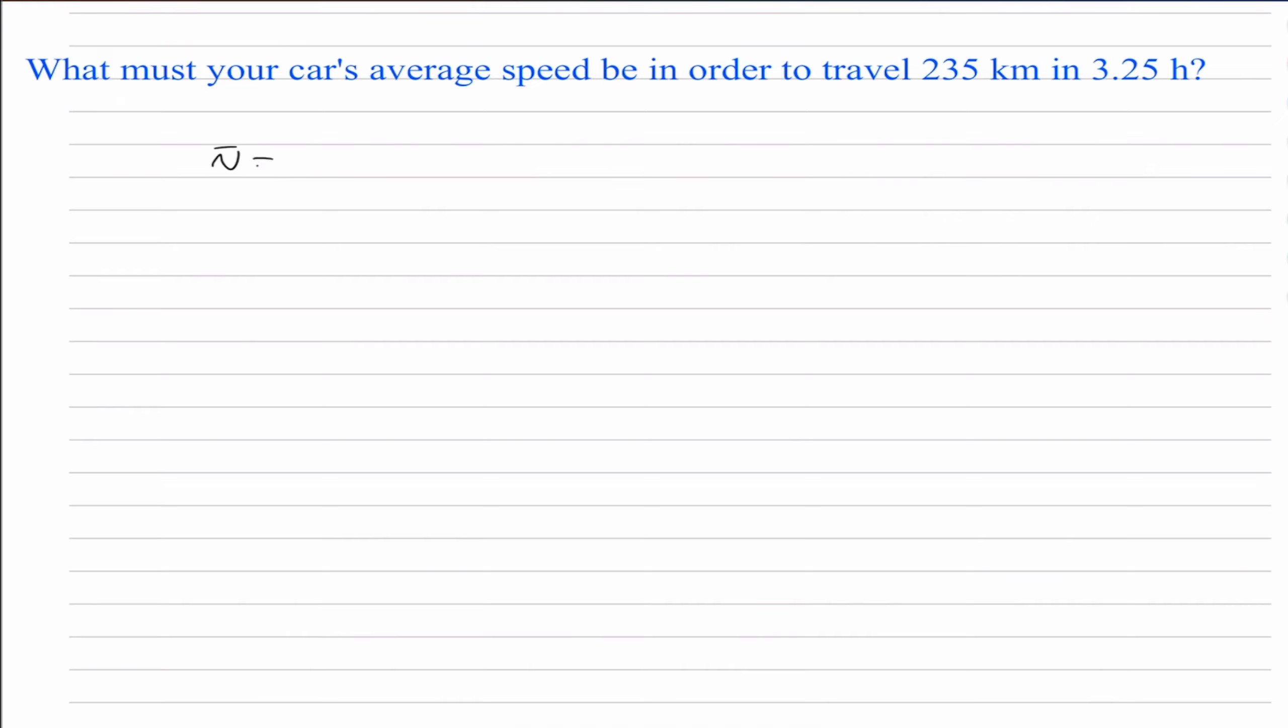So we have the average velocity is equal to the distance traveled divided by the time it takes to travel that distance. So we then go ahead to 235 kilometers divided by 3.25 hours. We then get that equal to 72.3 kilometers per hour.